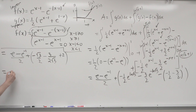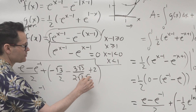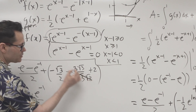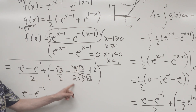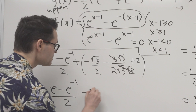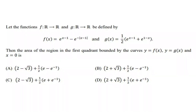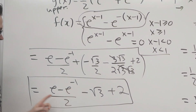So the final answer equals (e − e^(−1))/2 minus √3/2 minus √3/2 plus 2. I can rationalize: √3/2 + √3/2 = √3. So the area equals (e − e^(−1))/2 − √3 + 2. That represents the area between the two curves F and G in the first quadrant exclusively. The answer involves e, a radical, and the number 2.